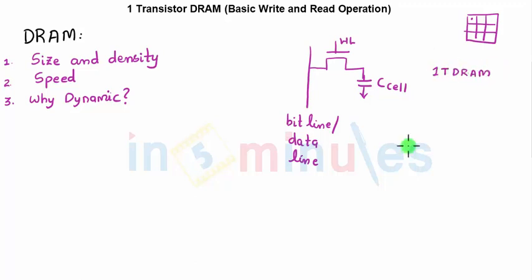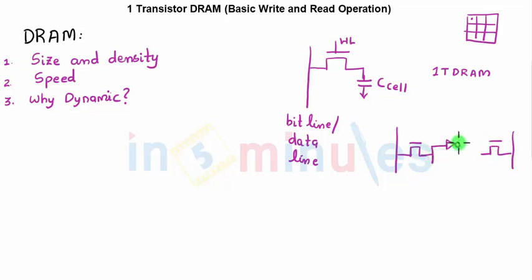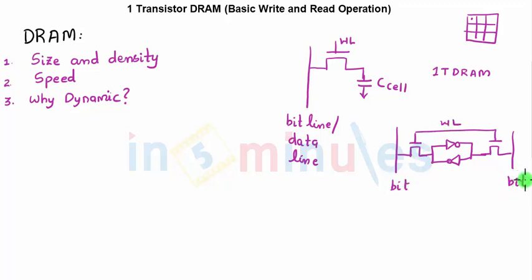It looks quite small compared to what we studied for SRAM, where we had two pass transistors connected to a bit and bit-bar line, which in turn were connected to inverters. At the transistor level, those two were the word lines and these were bit and bit-bar. So compared to six-transistor SRAM, this one-transistor DRAM looks quite compact, and hence the size of a DRAM is quite smaller compared to an SRAM.